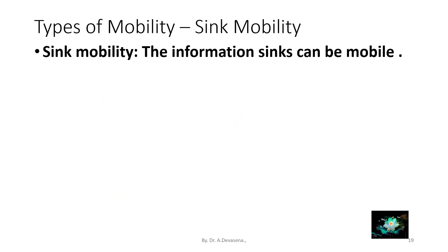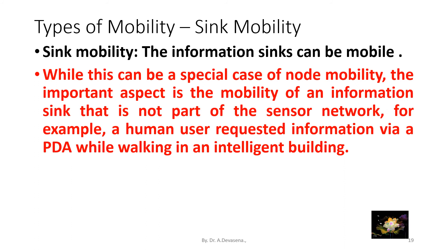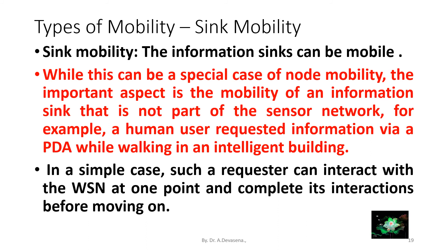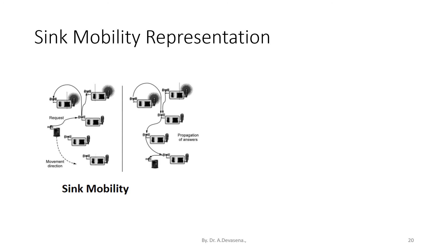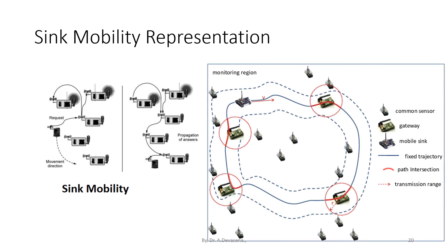Sink mobility: the information sinks can be mobile. While this can be a special case of node mobility, the important aspect is the mobility of an information sink that is not part of the sensor network itself. For example, a human user requesting information via a PDA while walking in an intelligent building. In such a case, the requester can interact with the wireless sensor network at one point and complete its interactions before moving on. The mobility representation is shown below, where a request is raised and reaches the destination, and the movement direction and provocation of answers are indicated.